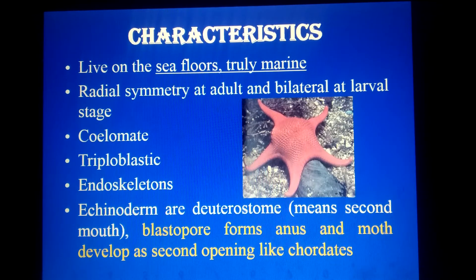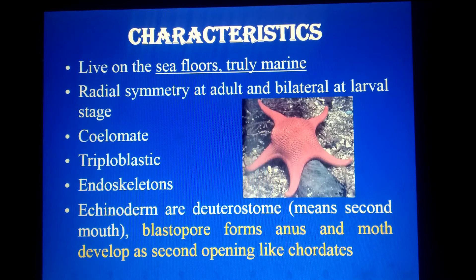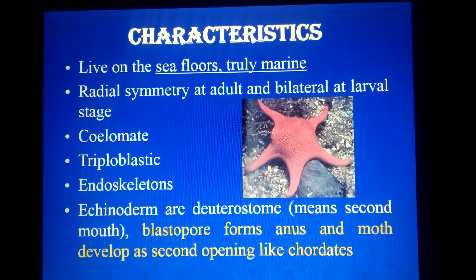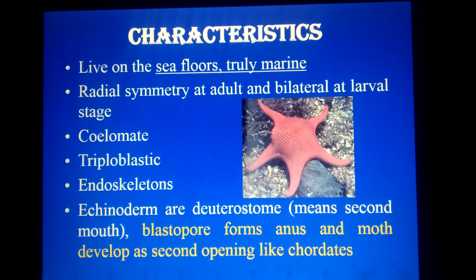The third point, which is very important: they are coelomate — they have a true body cavity. They are triploblastic, meaning at the embryonic stage they show three germ layers — ectoderm, endoderm, and mesoderm — from which the body develops. They also have an endoskeleton.